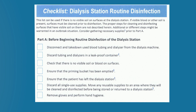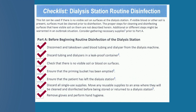Part A of the checklist has several key reminders, including the disconnecting, taking down, and discarding of used blood tubing and dialyzers in leak-proof containers. Checking for visible blood or soil, ensuring that the priming bucket has been emptied, that the patient has left the station, and discarding single-use supplies. Reusable supplies such as clamps should be moved to an area where they will be cleaned and disinfected before being stored or returned to a dialysis station.